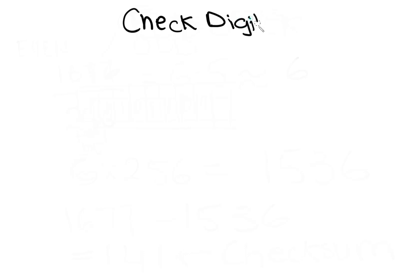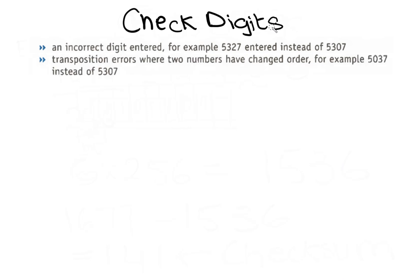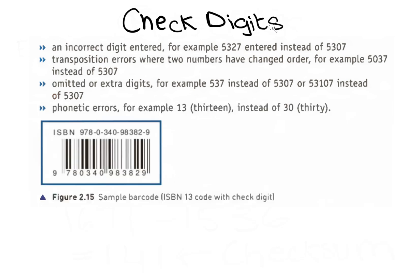Now let's talk about check digits. A check digit is the final digit included in a code, calculated from all the other digits in the code. Check digits are used for barcodes on products such as International Standard Book Numbers (ISBN) and Vehicle Identification Numbers (VIN). Check digits are used to identify errors in data entry caused by mistyping or misscanning a barcode. They can usually detect: an incorrect digit entered, transposition errors where two numbers have changed order, omitted or extra digits, and phonetic errors.